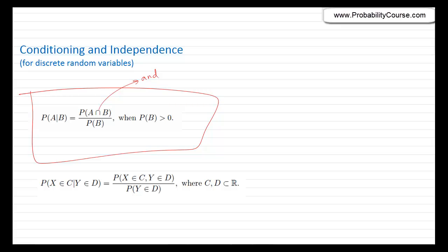We can have the same kind of problem for random variables. In particular, if you are interested in the probability that the random variable X belongs to set C, given that random variable Y belongs to set D, you can use the same formula. This equals the probability that X belongs to C and Y belongs to D, divided by the probability that Y belongs to D. So anything we have seen for random variables can have a conditional version.